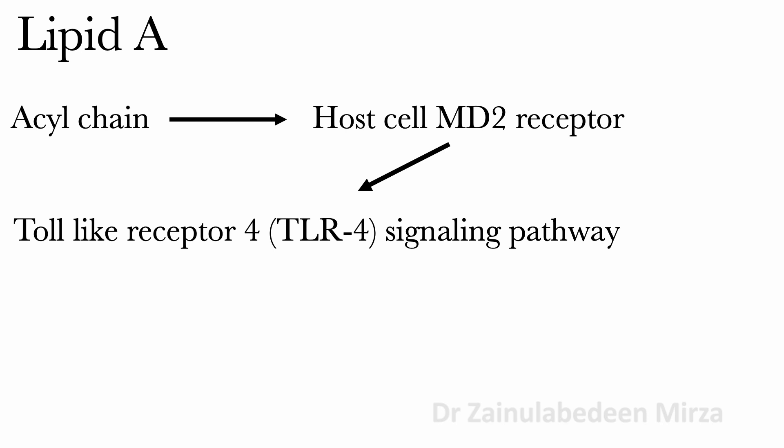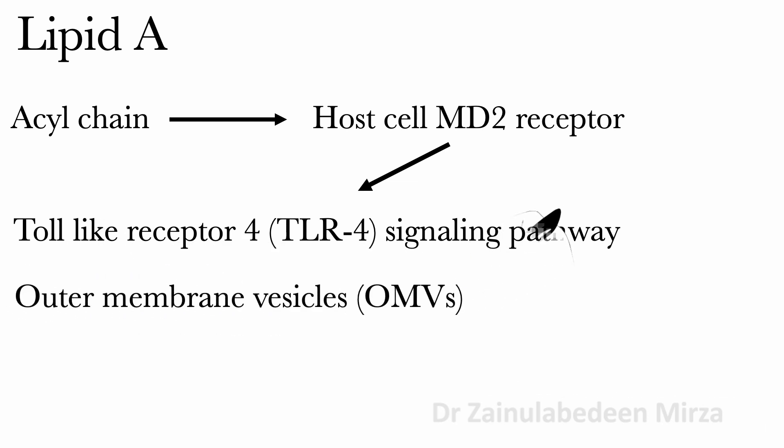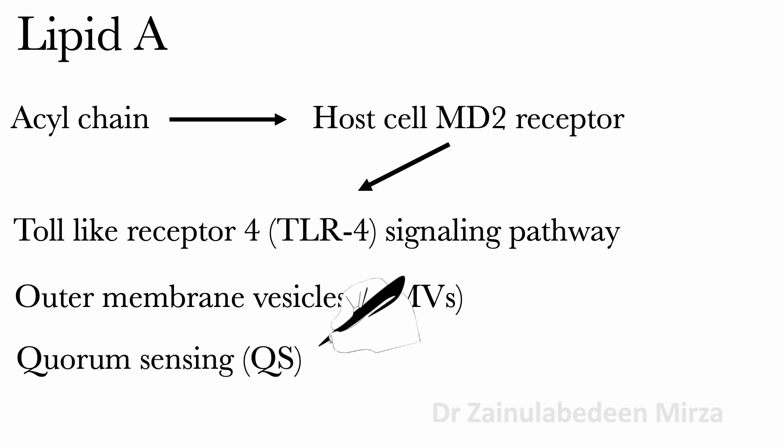Outer membrane vesicles (OMV) can be formed when both the acyl chain and the phosphate of lipid A interact with the quorum sensing system and are exported to the outer membrane.